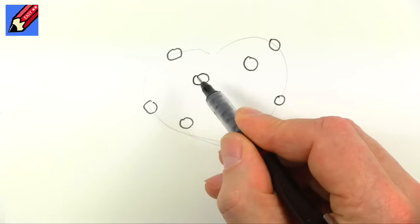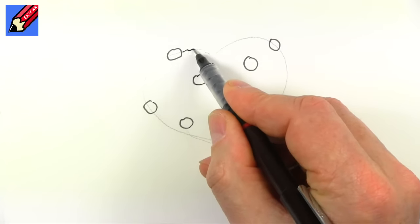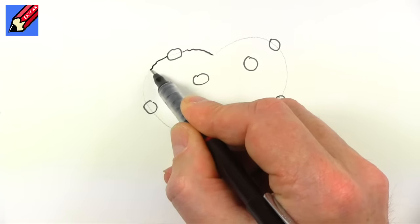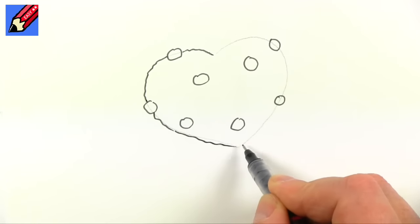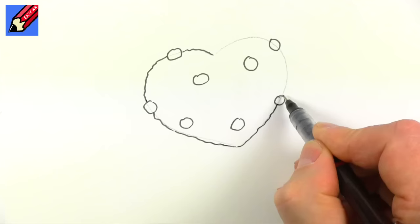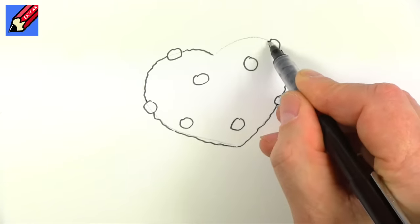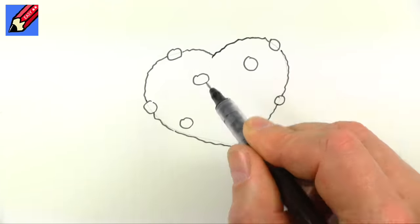These are all sort of crunchy bits of choc chip or whatever, and then you can make this line a little bit crumbly like that because a cake is never quite a perfect straight line, is it? So we've got this nice crumbly line like that.